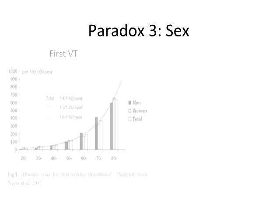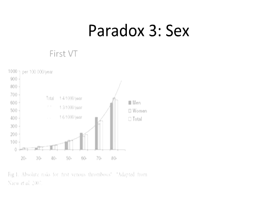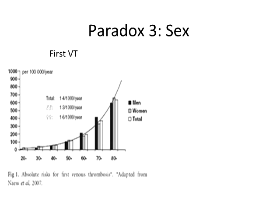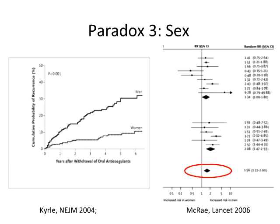The third paradox goes the other way around. Whereas the first two had an effect on first event but no effect on recurrence, for sex it's more or less reversed. For a first event, the risks for men and women differ a little but are not extremely different. But for recurrence, the risk is much higher in men compared to women. It was first described by Curley in the New England Journal of Medicine and confirmed in a large meta-analysis, where the combined relative risk is about 1.6 for men versus women.